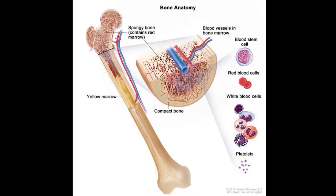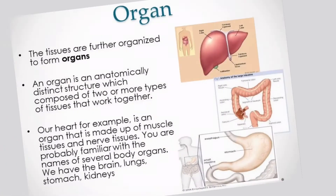For example, the cells in our bones form bone tissues, a strong solid tissue that gives us shape and support. The blood cells in our body are part of blood tissue, a fluid tissue responsible for transporting food and oxygen throughout our body.